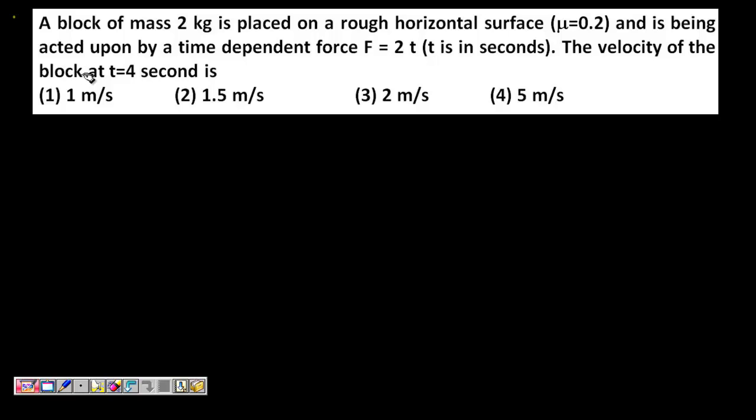The velocity of the block at t is equal to 4 seconds is - so what is given? You have one block given with mass 2 kg. Now it is placed on a rough surface. Rough surface means it has some friction and the corresponding coefficient of friction is 0.2 and we are applying a force 2t means a time dependent force.